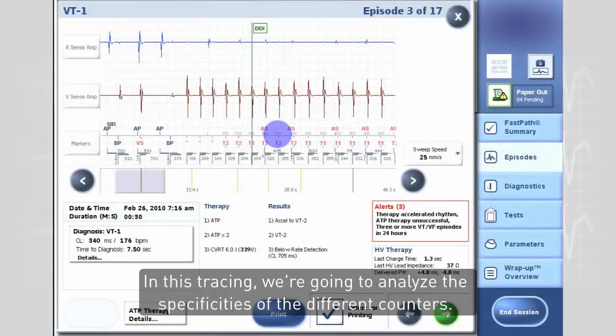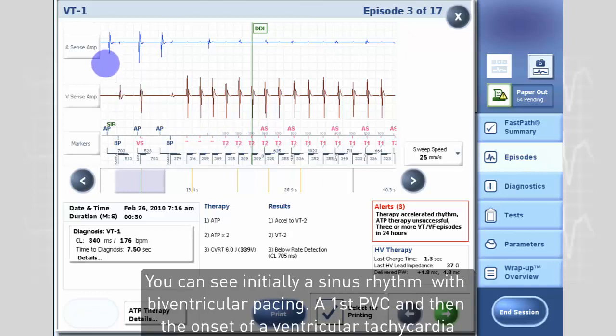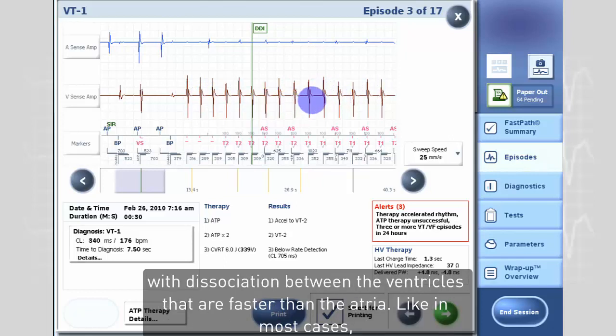In this tracing we are going to analyze the specificities of the different counters. You can see initially a sinus rhythm with biventricular pacing, a first PVC and then the onset of a ventricular tachycardia with dissociation between the ventricles that are faster than the atria.